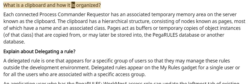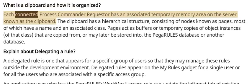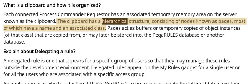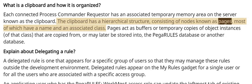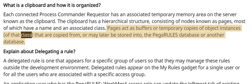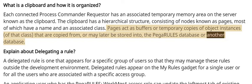What is a clipboard and how it is organized? Each connected Process Commander requester has an associated temporary memory area on the server known as the clipboard. The clipboard has a hierarchical structure, consisting of nodes known as pages, most of which have a name and an associated class. Pages act as buffers or temporary copies of object instances of that class that are copied from or may later be stored into the PEGA RULES database or another database.